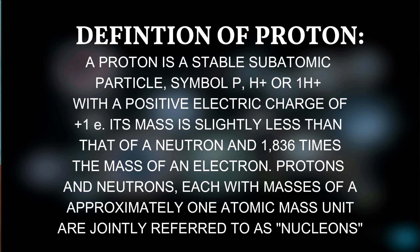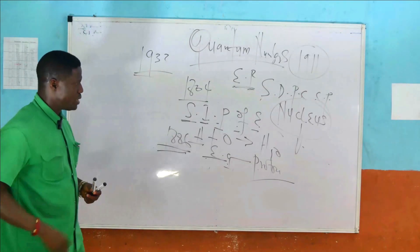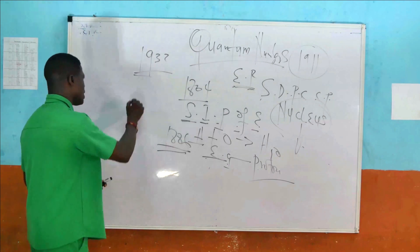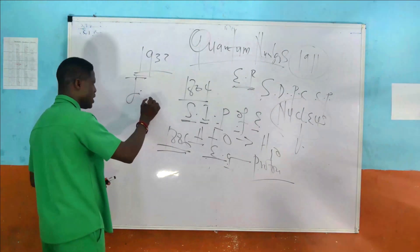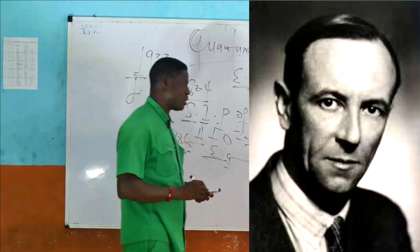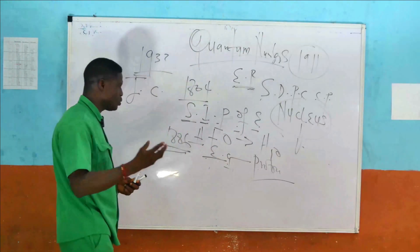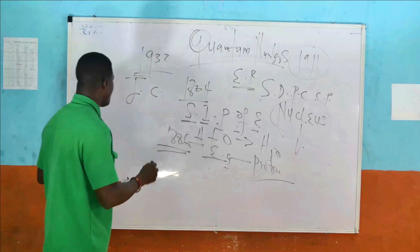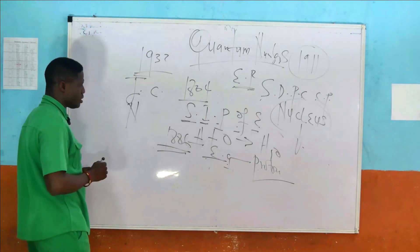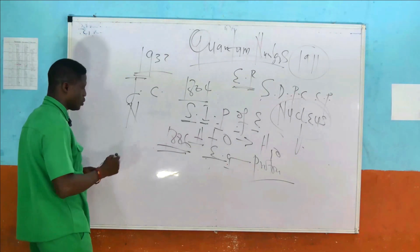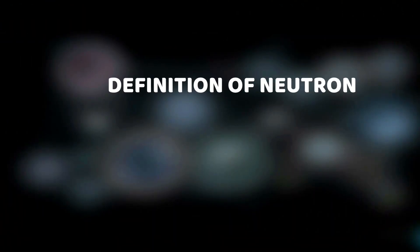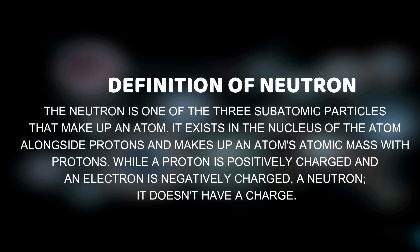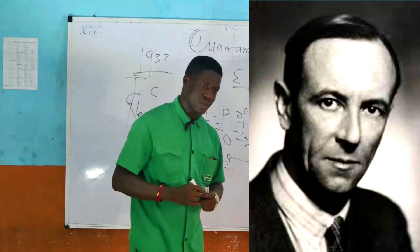In the year 1932, another remarkable discovery was made with respect to the nucleus of the atom, made by the chemist known as James Chadwick. Chadwick discovered, in addition to the positively charged proton discovered in 1886 by Eugene Goldstein, that there exists another sub-atomic particle, neutral in nature. This is the neutron — a sub-atomic particle found inside the nucleus of the atom, discovered in 1932 by James Chadwick.